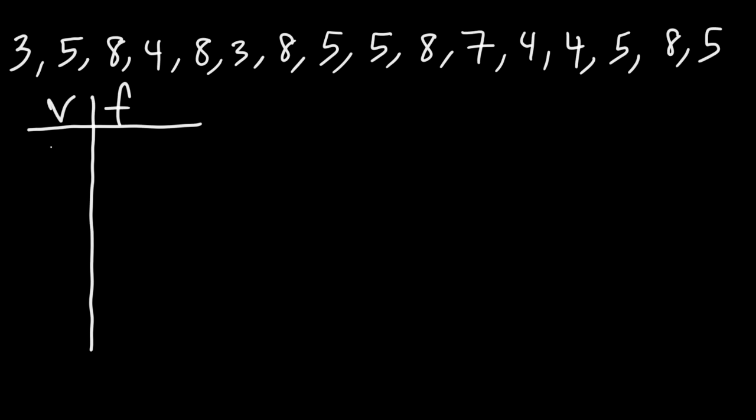The lowest value is 3. Now how often does the number 3 appear in that data set? Notice that we can see it two times, so the frequency of that value is 2.